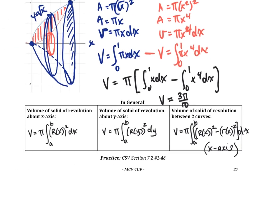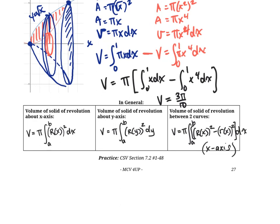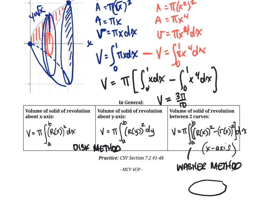One last thing: the first two methods — revolving a single curve around the x-axis or y-axis — are usually called the disk method, because we're summing up little disks. The version involving two curves is called the washer method, because each cross-section looks like a washer (as used for nuts and bolts) — you're taking out the middle of the disk to create a ring shape. Those are the terms you'll see in your textbook or online.